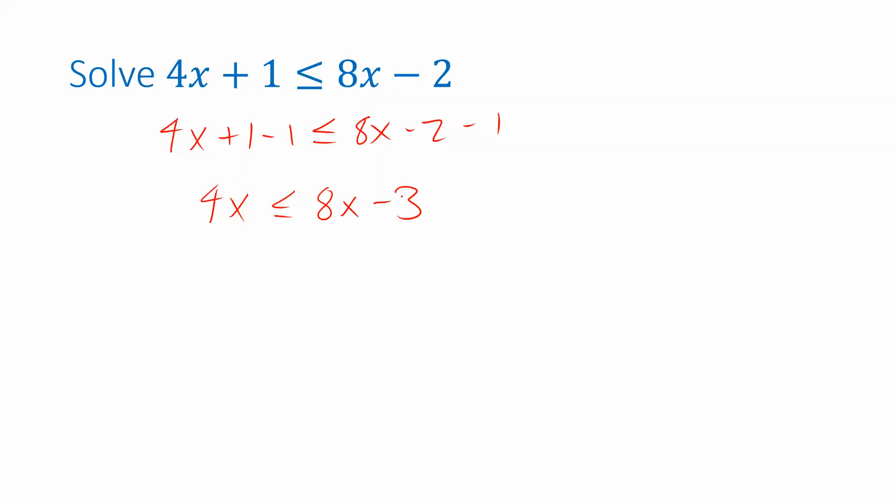Then I want to get all my x's on the left. So I'm going to subtract 8x from both sides. To cancel that 8x I need to subtract 8x and I need to do that from both sides. So on the right side they'll cancel and I just get minus 3. On the left side 4x minus 8x leaves me negative 4x.